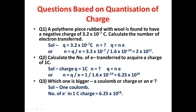Question 3: Which is bigger — 1 coulomb or the charge on one electron? Definitely 1 coulomb is the bigger charge, as 6.25 × 10¹⁸ electrons are required to acquire 1 coulomb of charge.